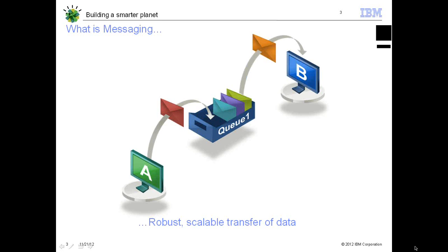So what is messaging? Messaging is a method of communication between software applications. Each application, henceforth called a messaging client, connects to the messaging queue that provides facilities for sending and receiving messages. From the picture, messaging client A connects to the messaging queue and sends messages, and messaging client B connects to the messaging queue and receives those messages.